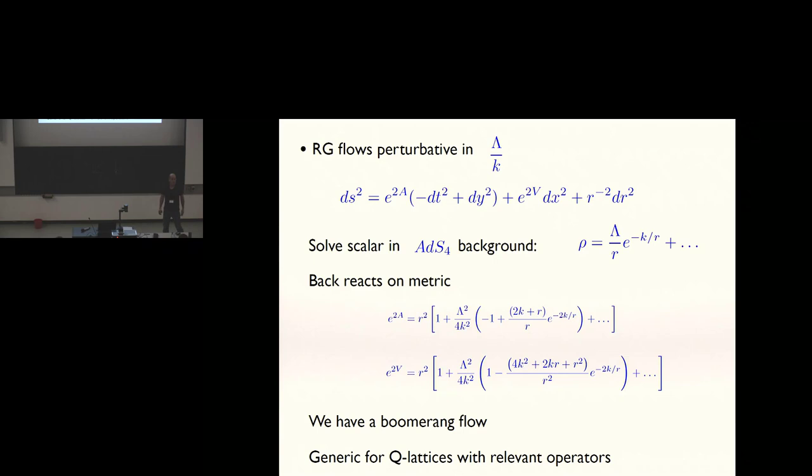This demonstrates that you have a boomerang flow. As R goes to infinity, it satisfies the boundary of AdS4 with the appropriate sources switched on, and when we've gone far in the infrared, R goes to zero, all that's been washed out just simply because of this e to the minus k over r behavior. This is an example of how boomerang flows are generic, at least in these Q-lattice constructions, because this e to the minus k over r behavior is taking your scalar, which is dual to a relevant operator in this case, and solving it in the AdS background. There'll always be some e to the minus k over r falloff, and that'll always get washed out in the far infrared.